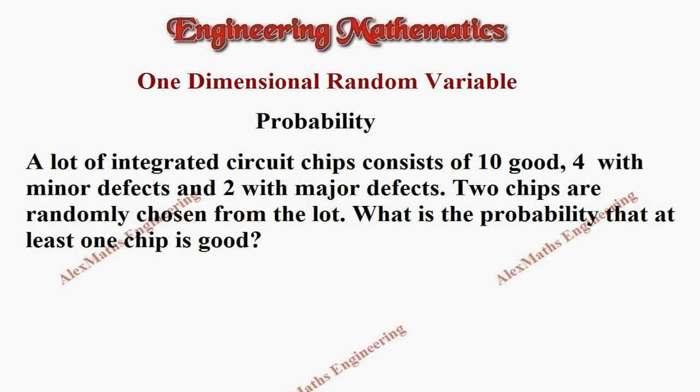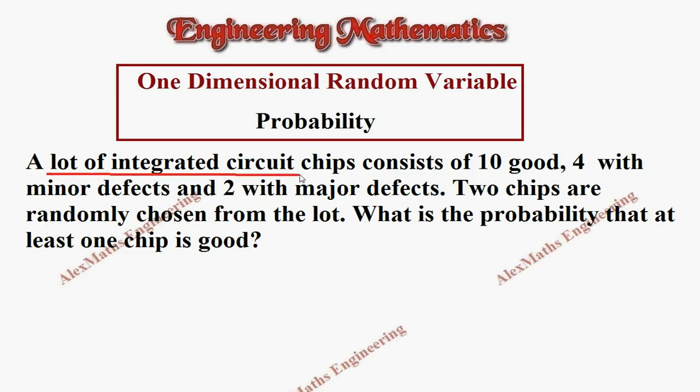Hi students, this is Alex. In this video we are going to solve a problem belonging to one-dimensional random variable under probability. The question: A lot of integrated circuit chips consists of 10 good, 4 with minor defects